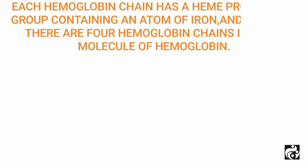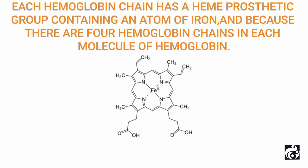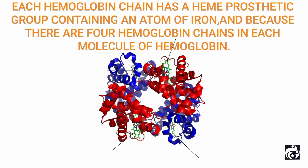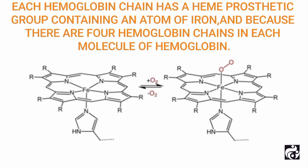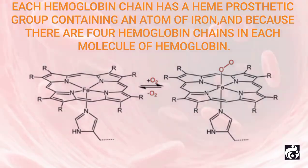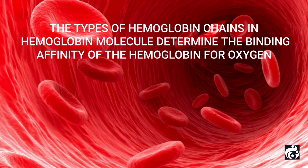Each hemoglobin chain has a heme prosthetic group containing an atom of iron, and because there are four hemoglobin chains in each molecule of hemoglobin, each of these can bind loosely with one molecule of oxygen, making a total of four molecules of oxygen that can be transported by each hemoglobin molecule. The types of hemoglobin chains in the hemoglobin molecule determine the binding affinity of the hemoglobin for oxygen.